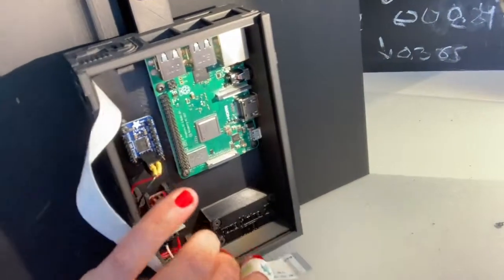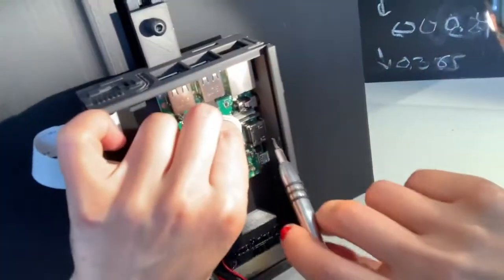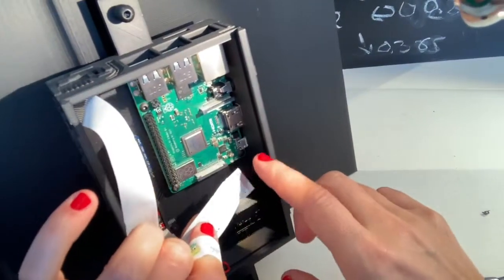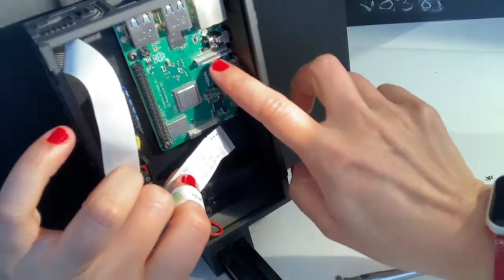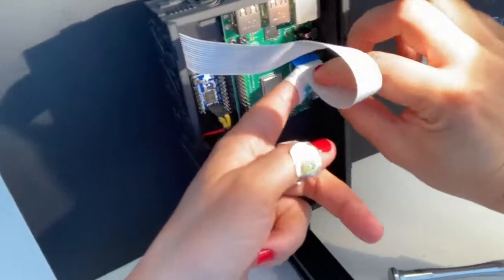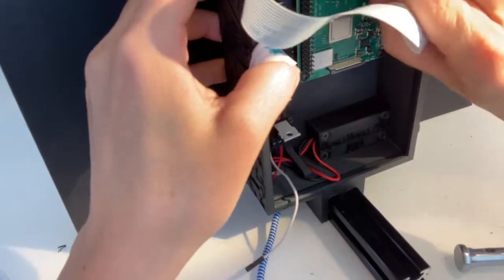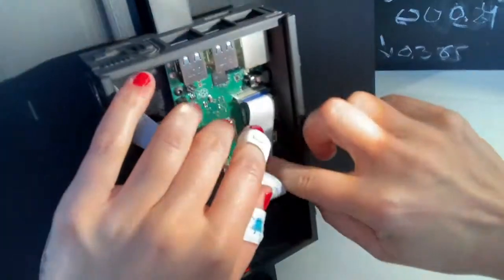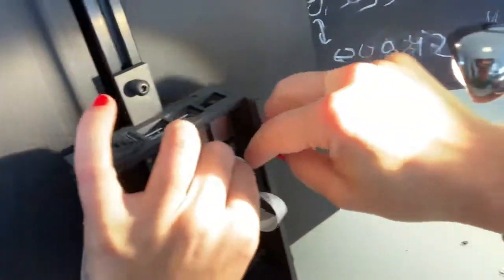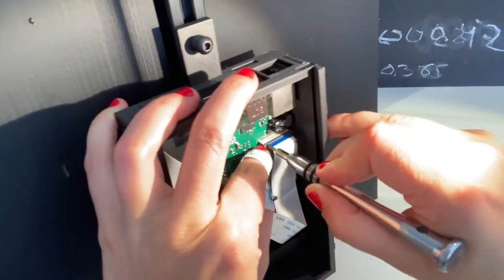And then you need to connect it to this part. And for this you need to pop out the holder for the flex cable. And again, make sure that the metal on the flex cable is touching, facing the metal on the port on the computer. And then you need to push the holder. Push it all the way in. And then close the holder.